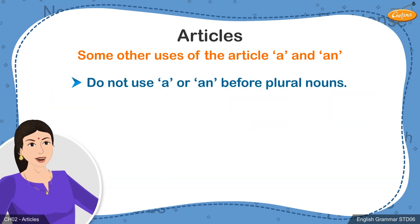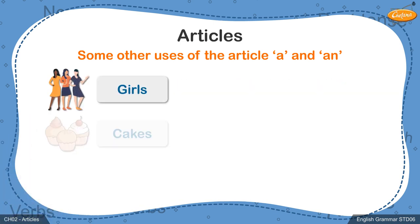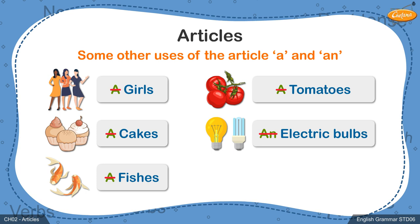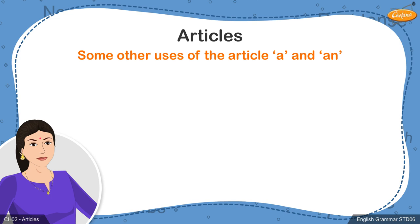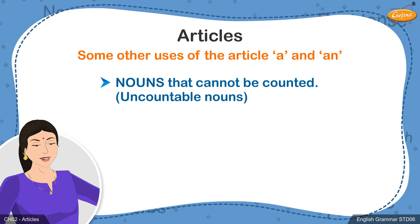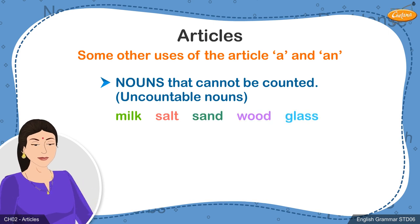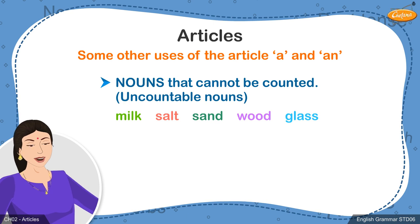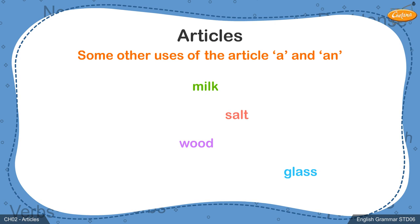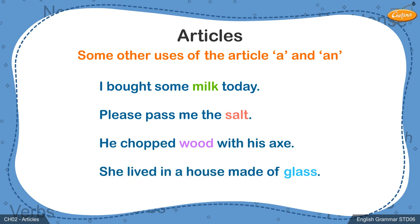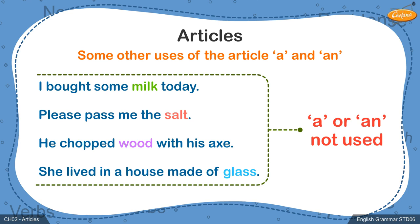The indefinite articles a and an are not used before plural nouns. Words like girls, cakes, fishes, tomatoes, electric bulbs are all plural nouns; we should not use the indefinite articles before such nouns. There are also some nouns that cannot be counted, called uncountable nouns. Words like milk, salt, sand, wood, glass are uncountable nouns. When these words are used in sentences, there is no need to insert an article before them. For example: I bought some milk today. Please pass me the salt. He chopped wood with his axe. She lived in a house made of glass.